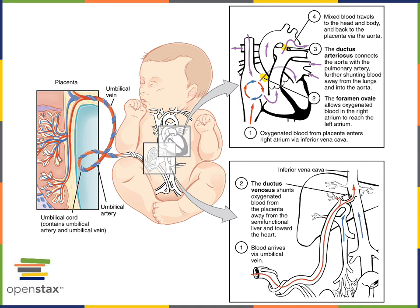Blood that's pumped out of the right ventricle into the pulmonary trunk can directly flow from the pulmonary trunk into the aorta through an opening known as the ductus arteriosus.